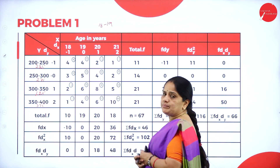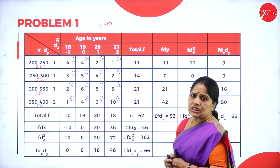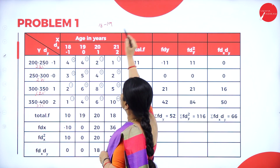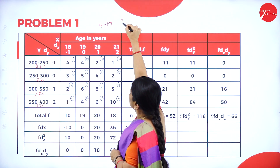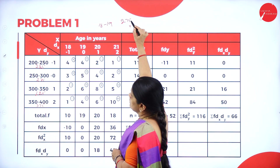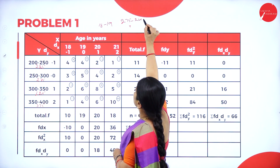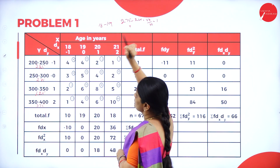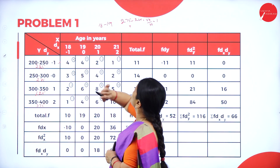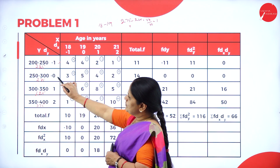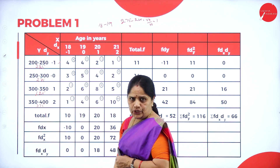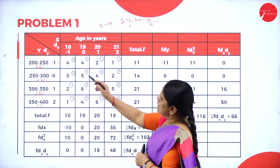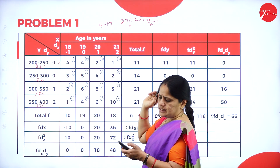Once you have the midpoint, you calculate the deviations from y. I have taken the assumed mean as 275. So: (225 − 275) / 50 = −1, then 0, +1, and +2. I have written all the frequencies as given: 4, 4, 2, 1, 3, 5, 4, 2, 2, 6, 8, 5, 1, 4, 6, 10.